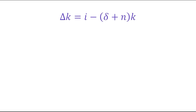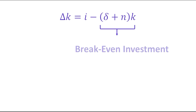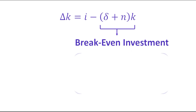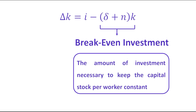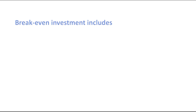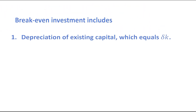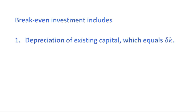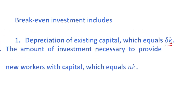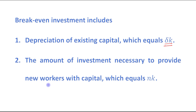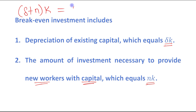In this equation, this portion is known as breakeven investment. Breakeven investment means the amount of investment necessary to keep the capital stock per worker constant. Breakeven investment includes: first, depreciation of the existing capital, which equals delta K; and second, the amount of investment necessary to provide new workers with capital, which equals NK. So breakeven investment is (delta plus N) times K, which equals delta K plus NK.